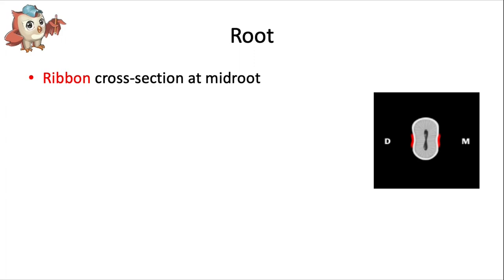If we cut the tooth into cross-section at the middle of the root, we see a ribbon shape. That's because of those deep developmental depressions on both the mesial and distal root surfaces.